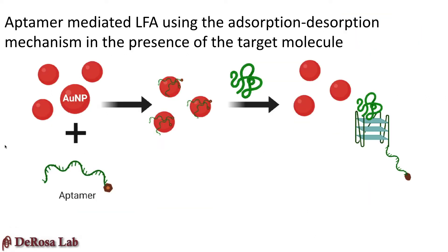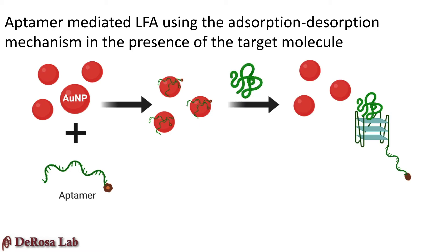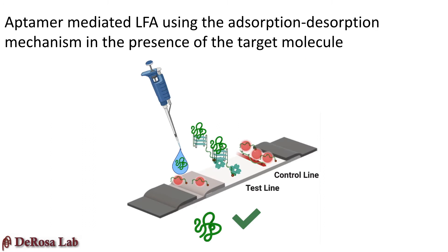Below is a schematic showing the mechanism of action for aptamer-mediated LFAs in the presence of target. First, the biotin-labeled aptamer and gold nanoparticles are incubated and the aptamers passivate the nanoparticle surface. Gold nanoparticles are frequently used in the adsorption-desorption method of LFAs because of their optical phenomenon known as localized surface plasmon resonance, or LSPR, that gives them a distinct dark red color. Upon the addition of target, the aptamer preferentially binds the target and desorbs from the nanoparticle surface. On a strip, the presence of target translates to the absence of a signal at the test line.